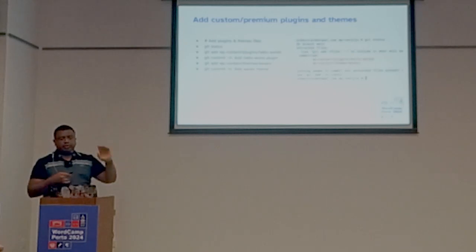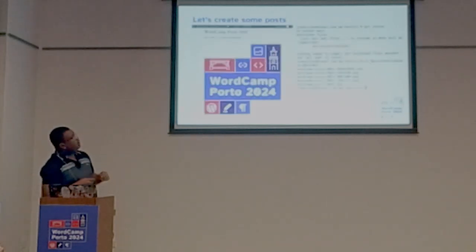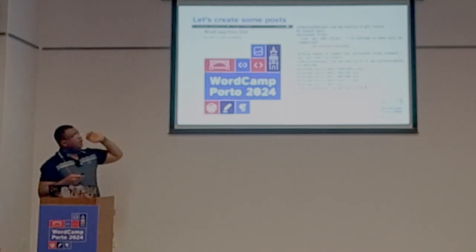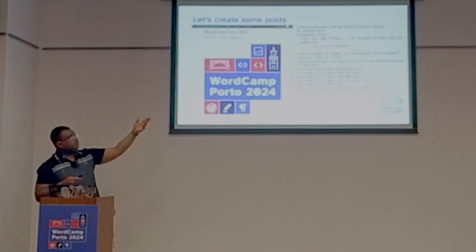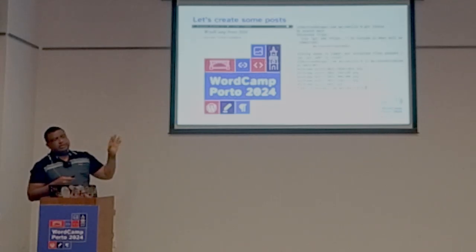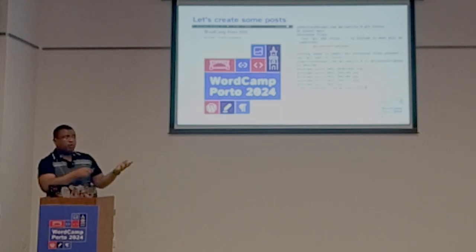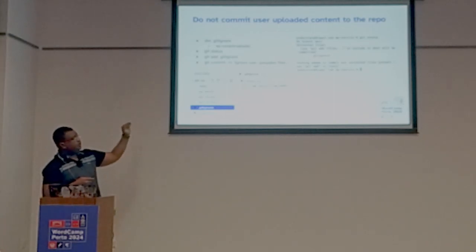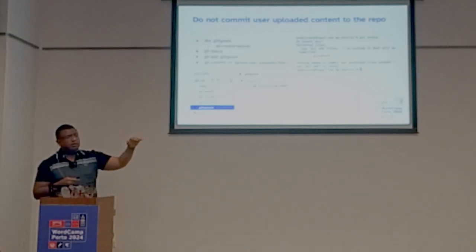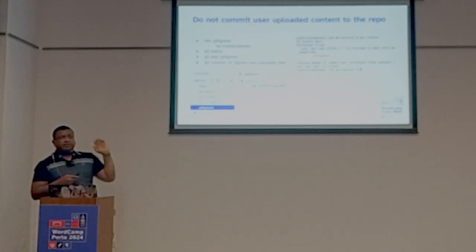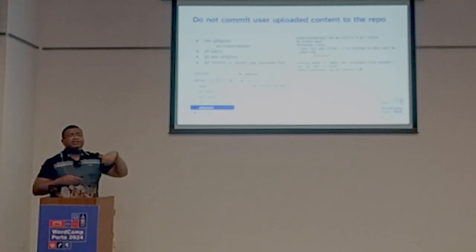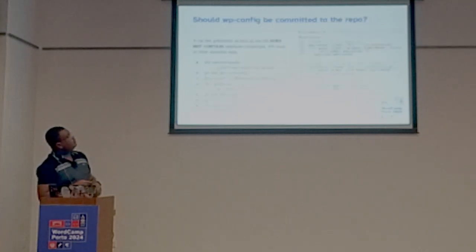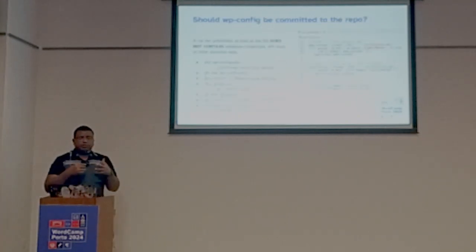Once you create a new post and upload an image, you get files in wp-content/uploads — you do not want to add those to the repository. To exclude them, create a gitignore file and add one line for that folder. The gitignore file itself, however, needs to be included in the Git repository.